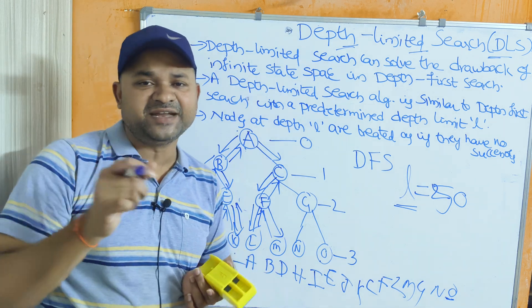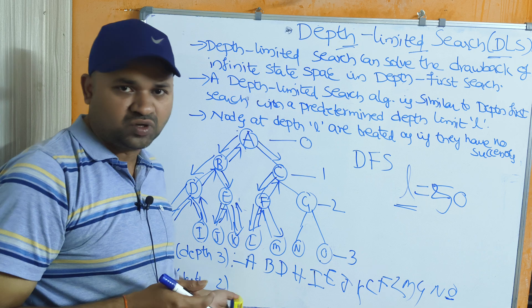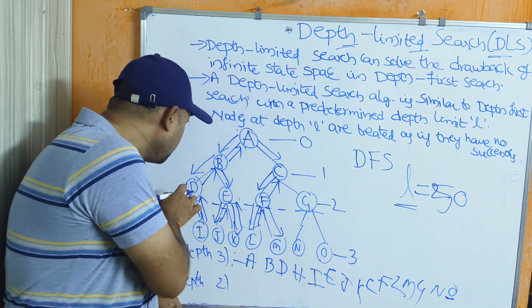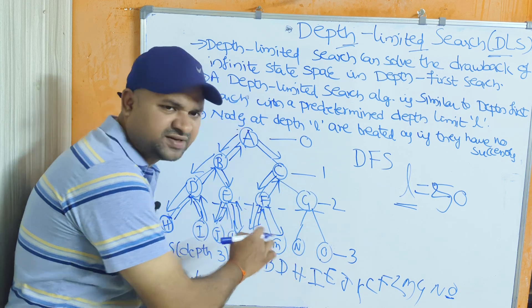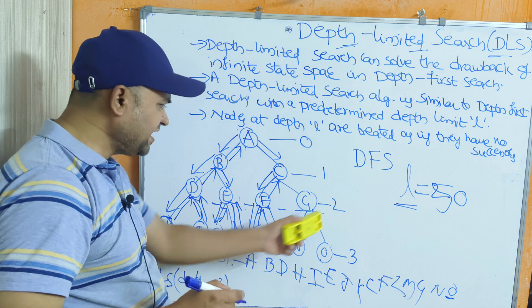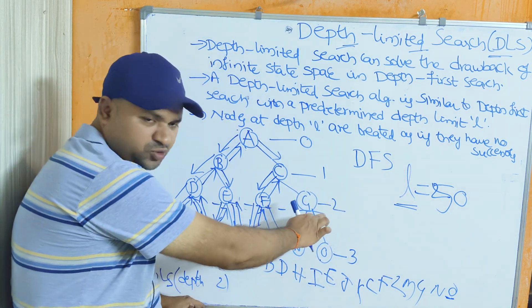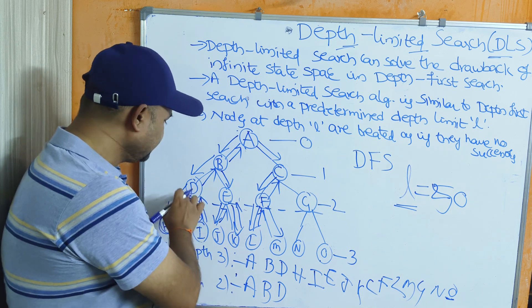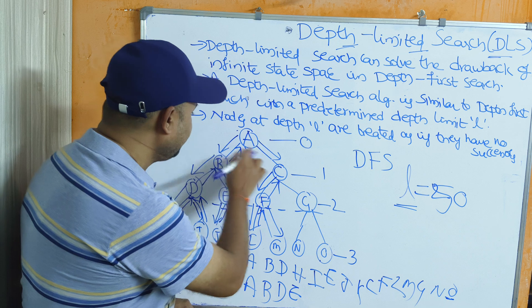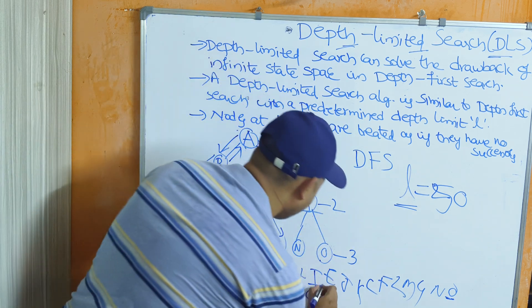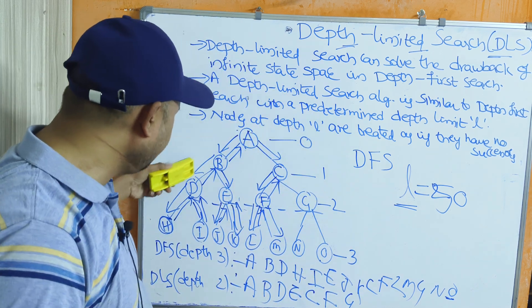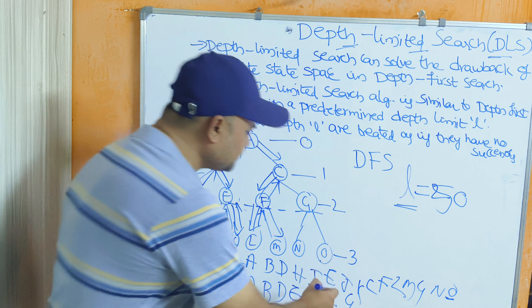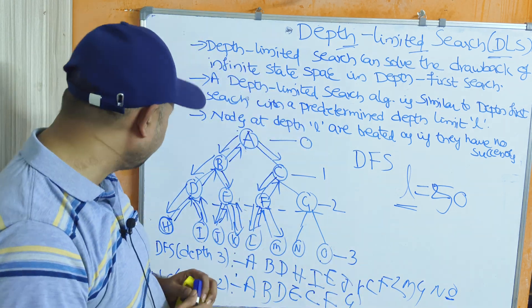Now let us apply the DLS algorithm with a predetermined depth limit of 2. We search only up to this depth. Starting at A, we go to B, then D — that is depth 2, so we backtrack. Then E, then backtrack to C, then F, then G. If G is the goal node, the path found by DLS is: A, B, D, E, C, F, G.